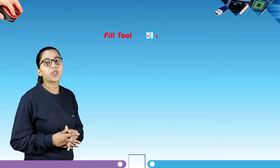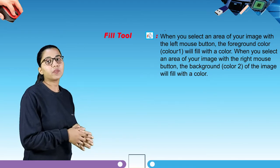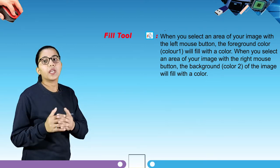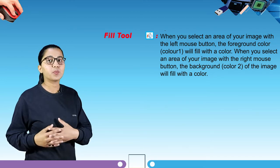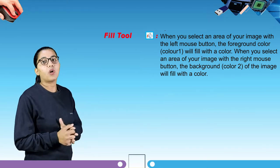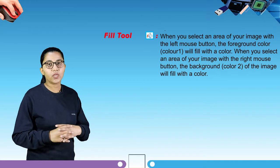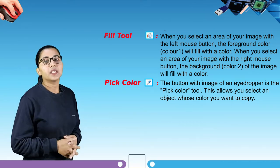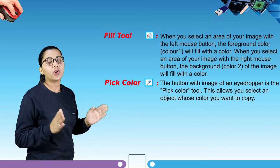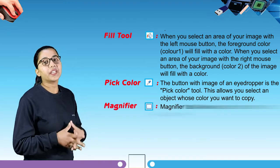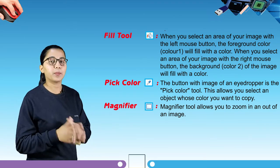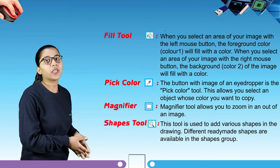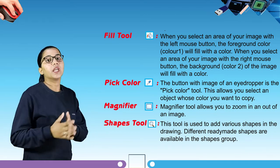Next is the fill tool. When you select an area of your image with the left mouse button, the foreground color of the image will fill with a color. The pick color tool — the button with the image of an eyedropper — allows you to select an object whose color you want to copy. The magnifier tool allows you to zoom in and out of an image. The shapes tool is used to add various shapes in the drawing; different ready-made shapes are available in the shapes group.